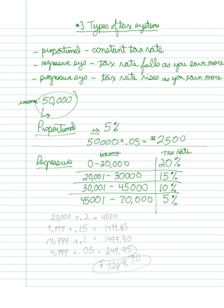In a regressive system, as you can see, the tax rate falls as you earn more and more money. The reason you would do this is because you think that as people earn more money, they'll invest it in the economy and spend more. This tends to be a conservative or Republican point of view, which is why conservatives generally call for lower taxes — they believe regressive taxes encourage people to spend more money.